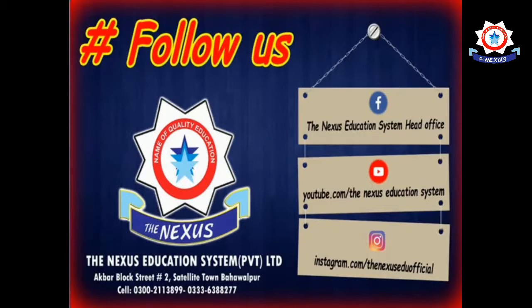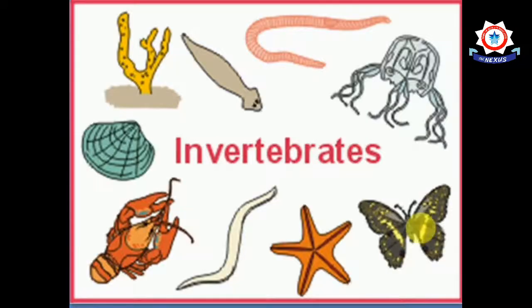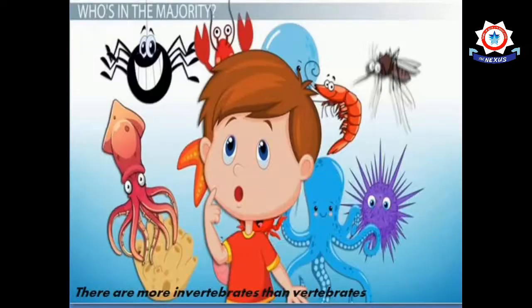As I told you in my previous video, today our topic is invertebrates. Animals that don't have a backbone or spinal column are called invertebrates. Invertebrate animals either have a hard exterior shell covering or no hard covering or skeleton at all. There are more invertebrates than vertebrates on the earth, and they are divided according to the structural features of their bodies.